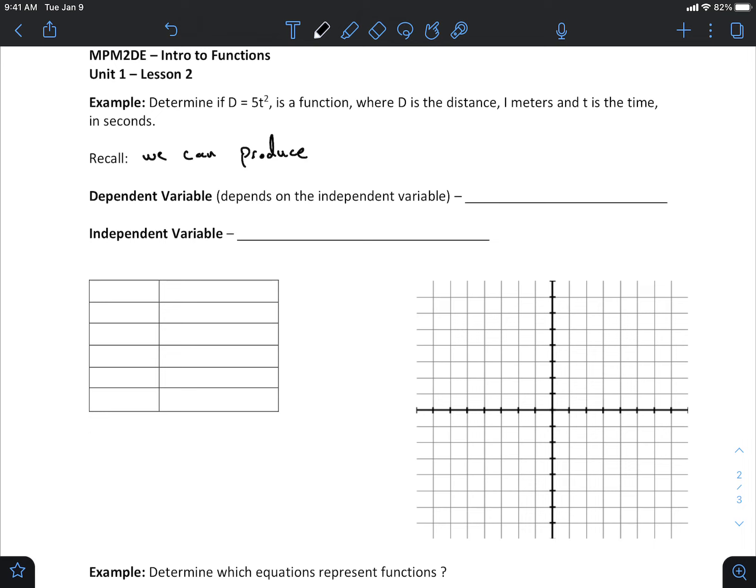We could produce points on the graph by plugging in time values and finding distances. Make sense? Are we all right?